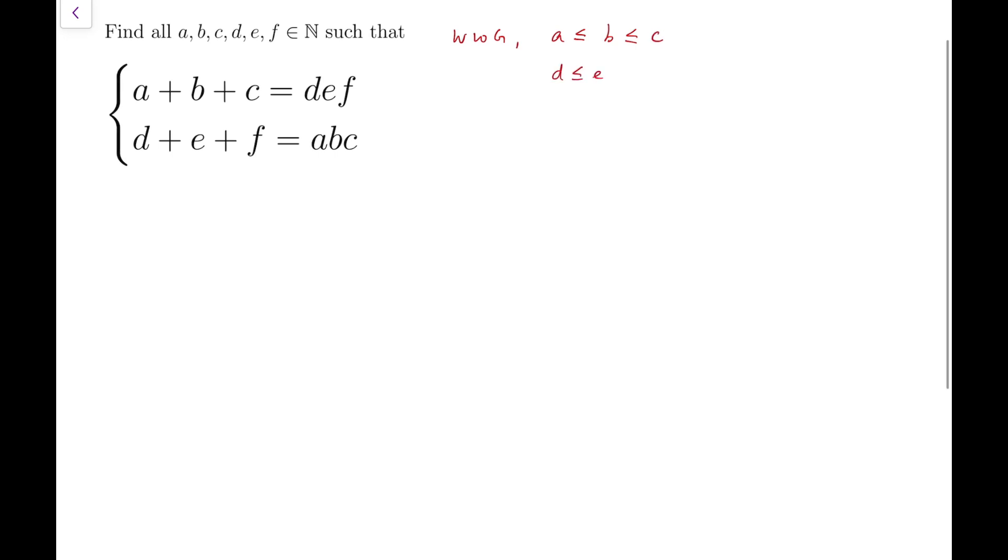So I would say that WLOG, I can assume that a is the smallest, followed by b, followed by c, and same for d, e, and f.